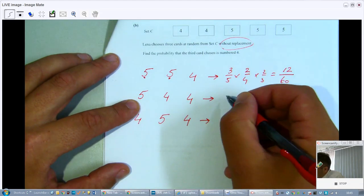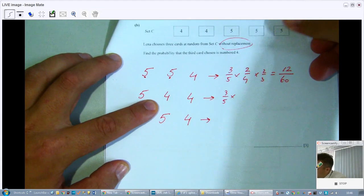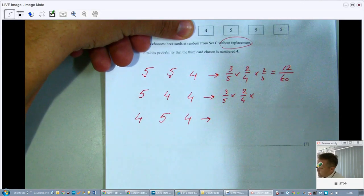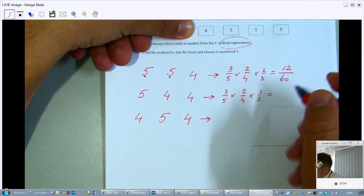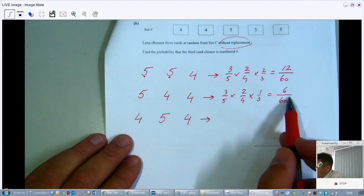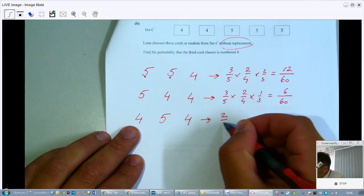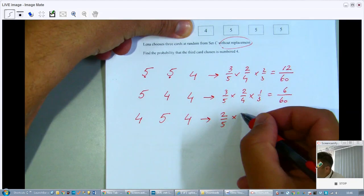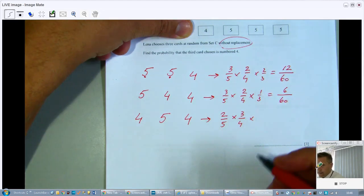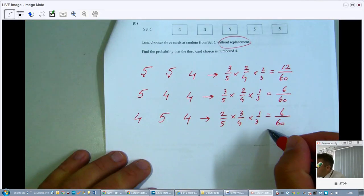Or a 5, which is a chance of 3 out of 5, and a 4, which is 2 out of 4, and another 4, which is 1 out of 3. And work that out, that will be 6 out of 16. And this one must be the same as 6 out of 60, but let's just check that. A 4, so there's a chance of 2 out of 5, and a 5, 3 out of 4, and then again a 4, 1 out of 3. And indeed, that will give you, but I just want to be sure, 6 out of 60. So all of them are correct.